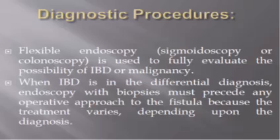Diagnostic procedures: flexible endoscopy — either sigmoidoscope or colonoscope — is used to fully evaluate the possibility of inflammatory bowel disease or malignancy, and to visualize the fistula. When inflammatory bowel disease is in the differential diagnosis, endoscopy with biopsy must precede any operative approach to the fistula, because treatment varies according to the cause.